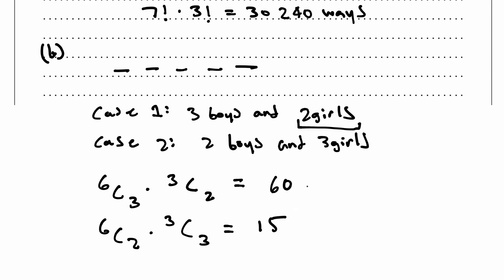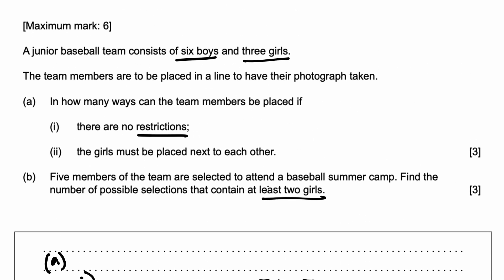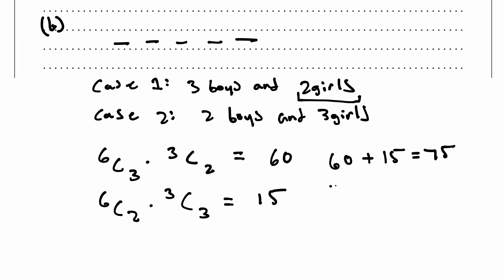So if we add 60 plus 15, we get 75. So there are 75 possible selections. That's the answer to this question.